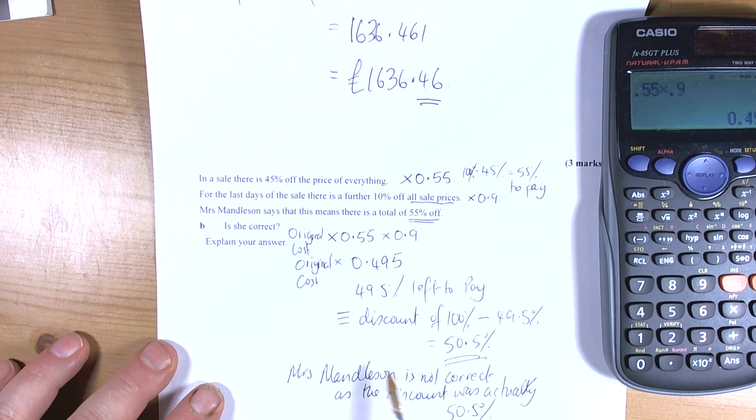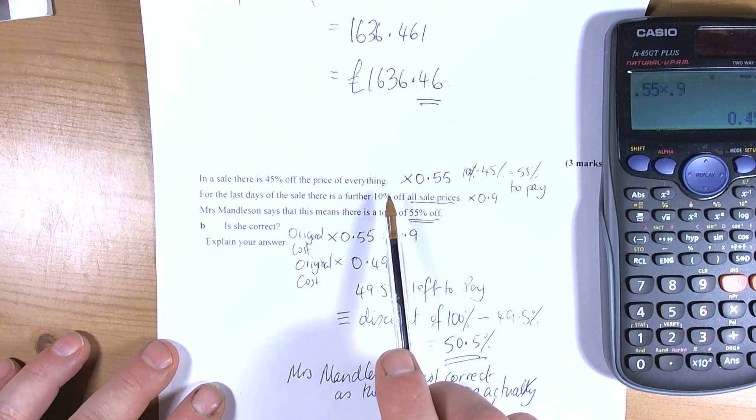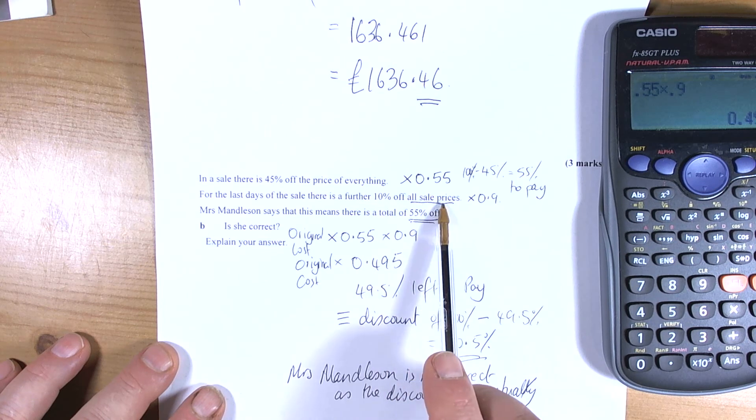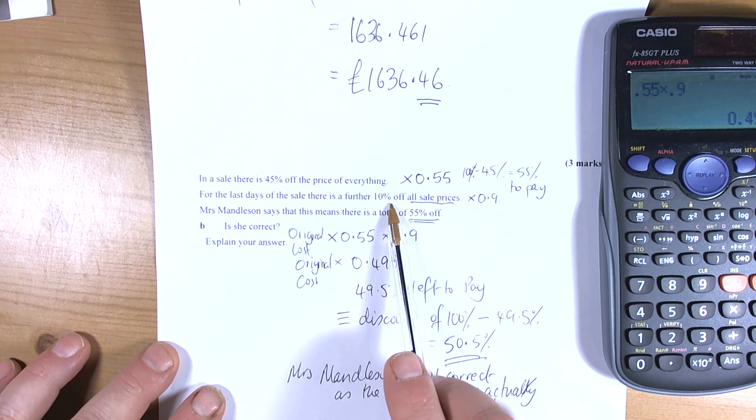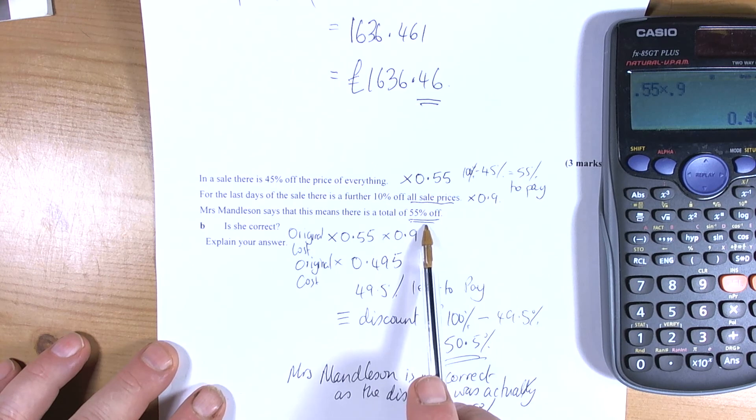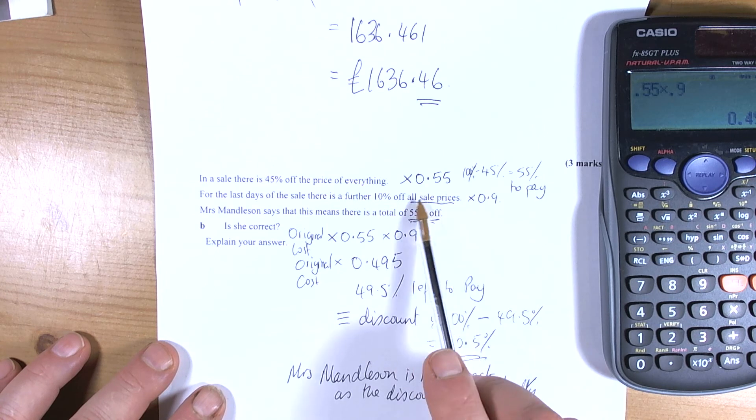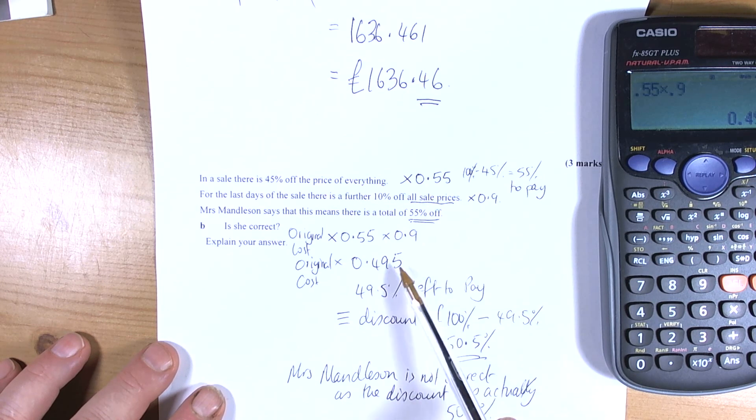Okay. So that's the way that question works. Because we need to be careful that we've understood that it's 10% off all sale prices. So we're not taking 10% off the original amount, which would have been a 55% discount. Because we're 45% off then a further 10% off the original price. But it's 10% off the sale price. So we've got to work out 10% of what we end up paying after the first offer. So there's a few questions to get you going.